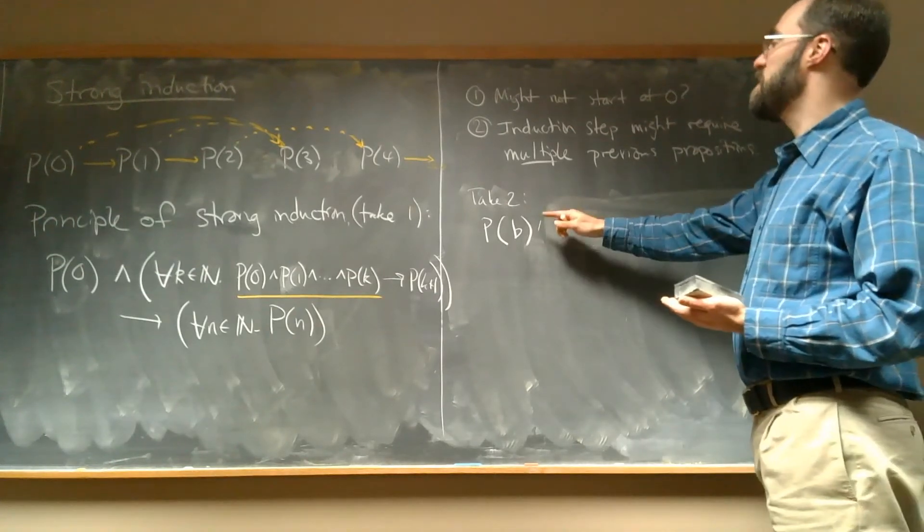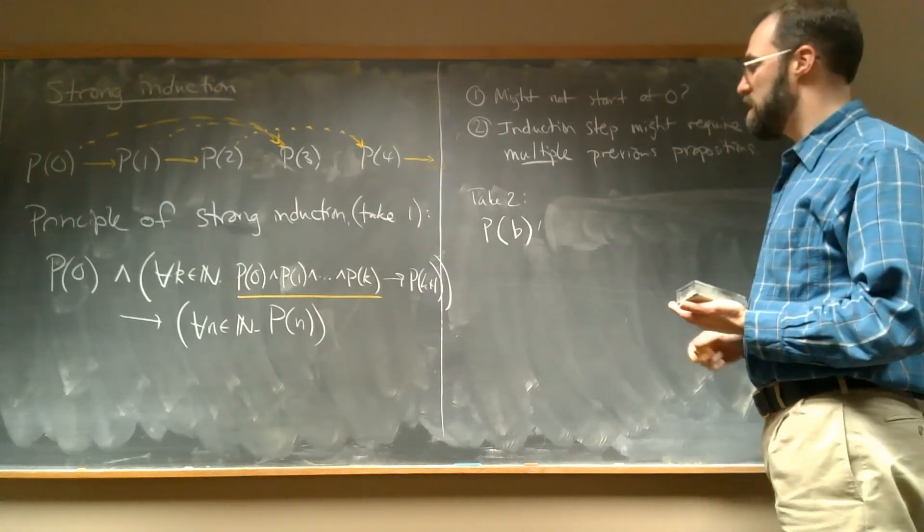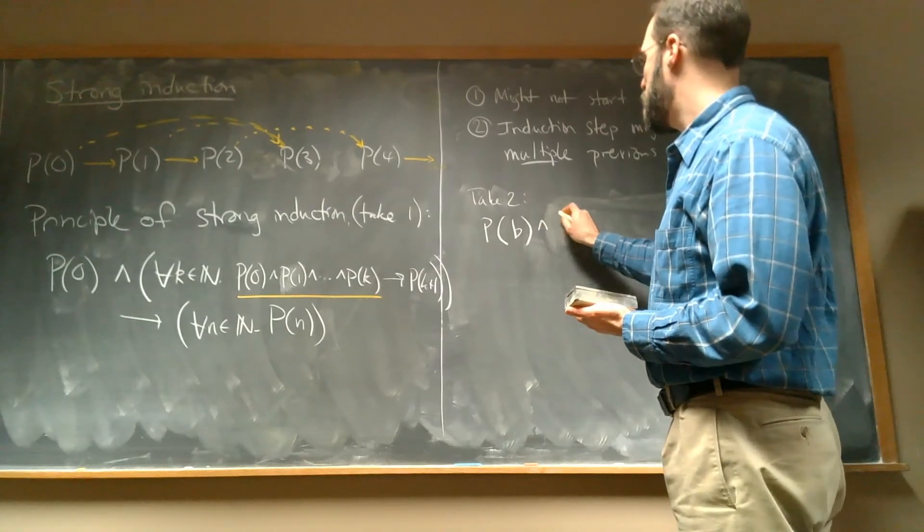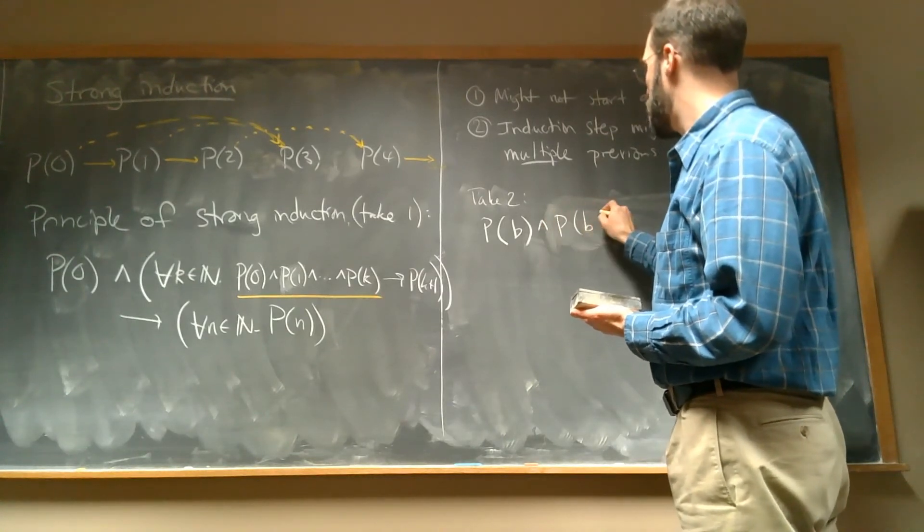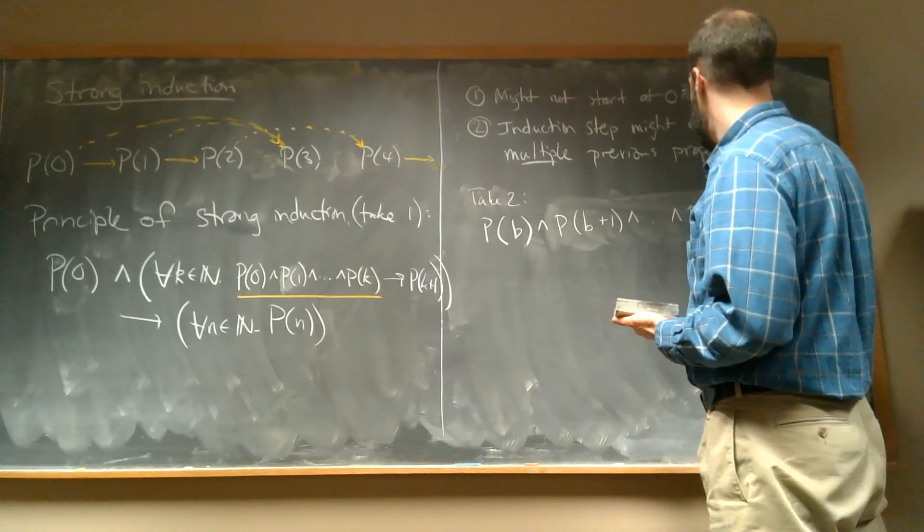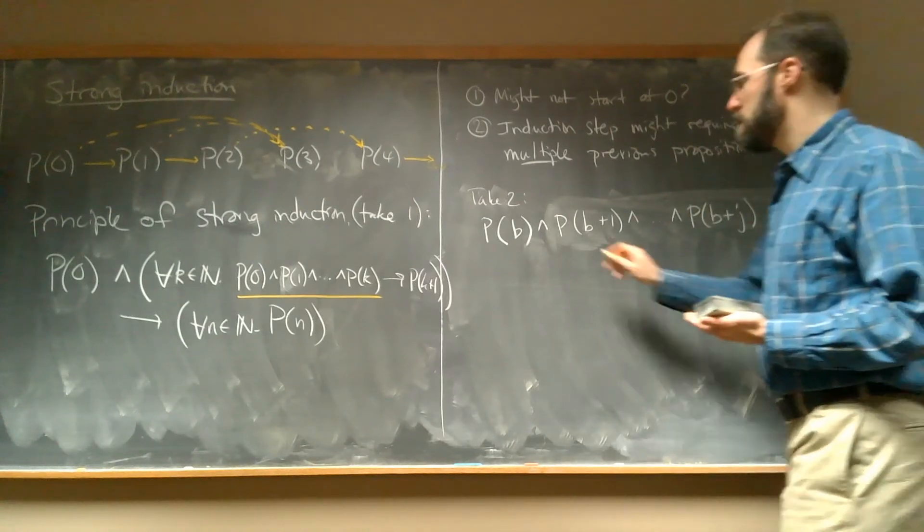The point of this is that we actually need more than one base case, and I forgot that as I was writing this. So we need to assume P(B) and P(B+1) and dot dot dot and P(B+J). Right? These are all our base cases.